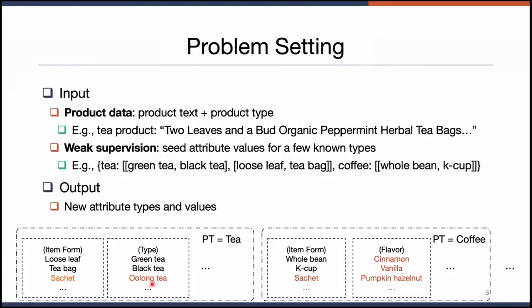For attributes with seed values — for example, the item form and type of tea products — we want the model to find more values for those attributes. And what's more, we want the model to be able to discover new attributes entirely. For example, we want the model to discover flavors of coffee products.